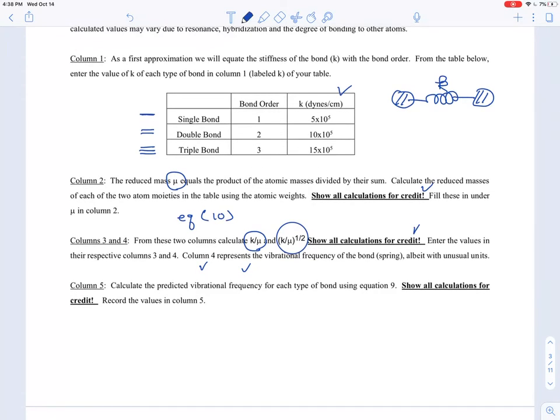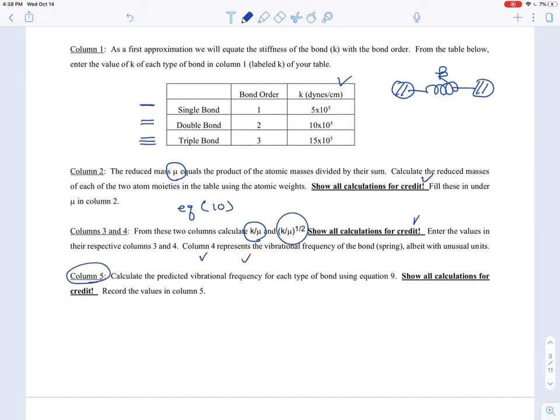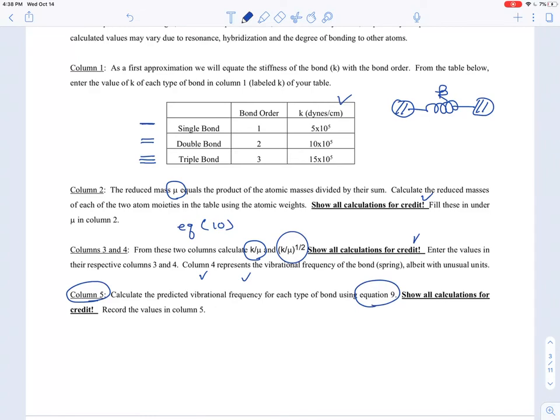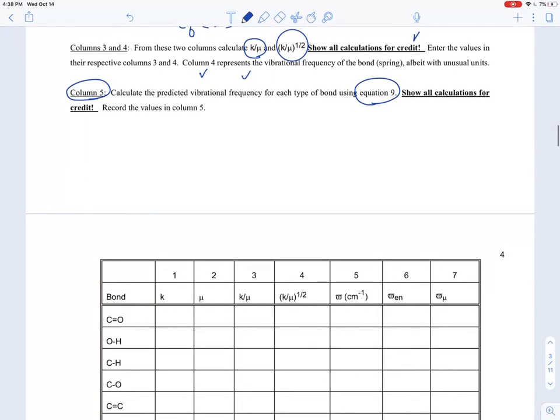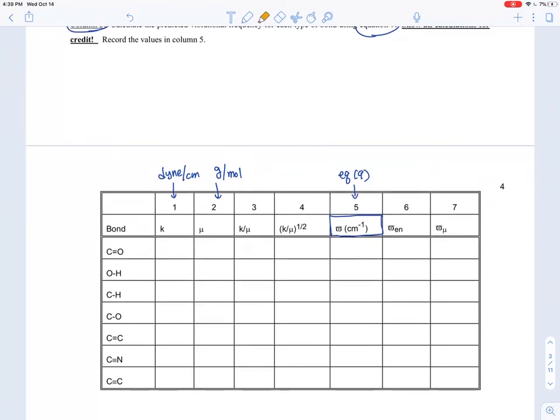The calculation in column two is based on using equation number 10. Columns three and four you can just continue to calculate because you know the K values and mu values. You can just calculate and make sure that you show all this because the TA will be grading. Then column five is using equation number nine, which is shown right here.